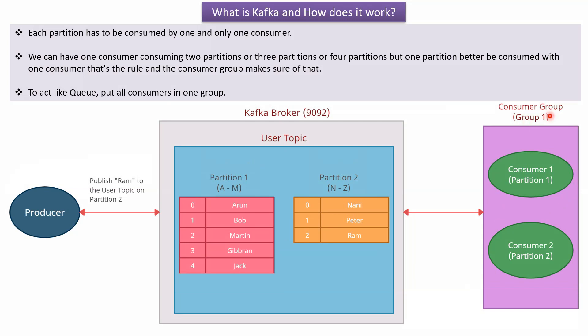Here you can see that in a consumer group there are two consumers. Consumer 1 is responsible for consuming usernames from partition 1, and consumer 2 is responsible for consuming usernames from partition 2. In Apache Kafka, there is a rule: each partition has to be consumed by one and only one consumer within the same group. We can have one consumer consuming two or more partitions, but within the same group, one consumer can consume messages from only one partition.